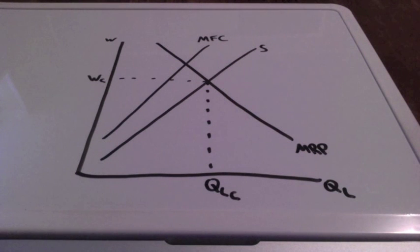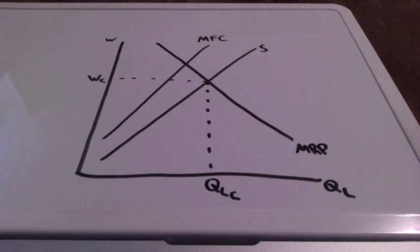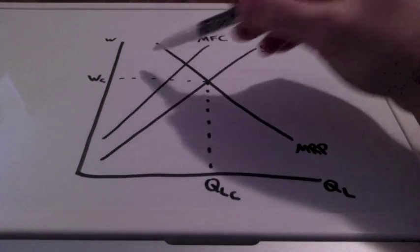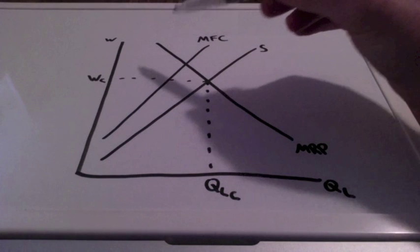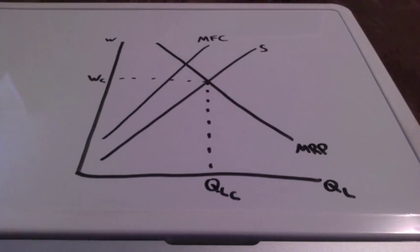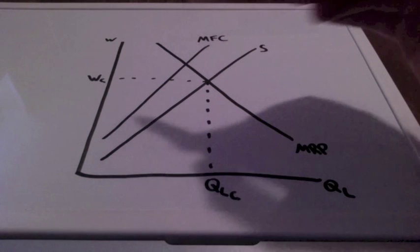Monopsonies have the marginal factor cost curve. To buy a larger quantity of output, the firm must pay a higher price. For this reason, the marginal factor cost from hiring the next worker is greater than the wage or factor price.